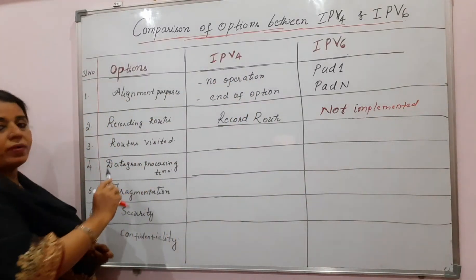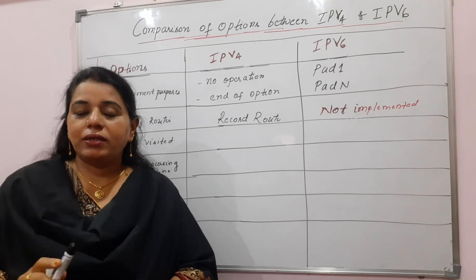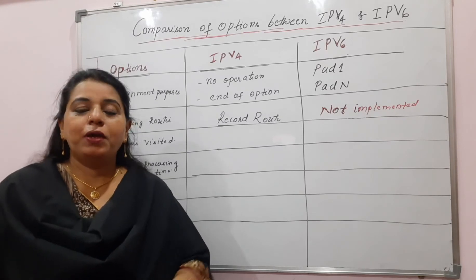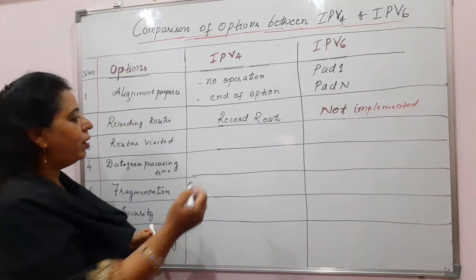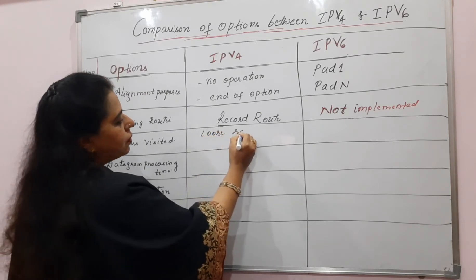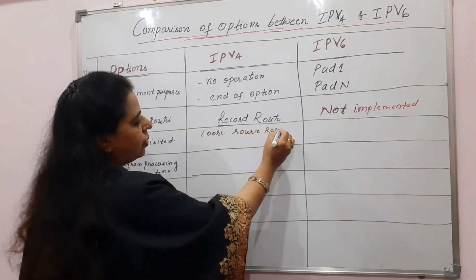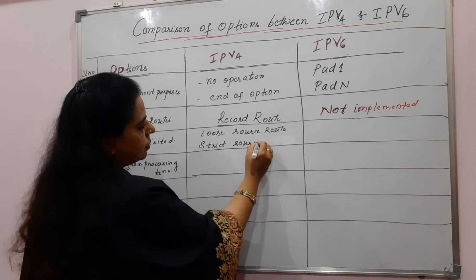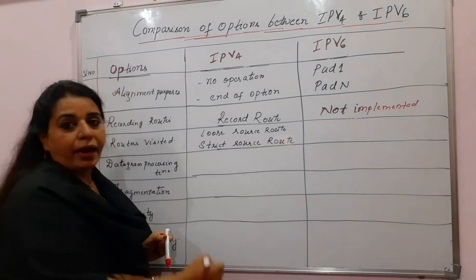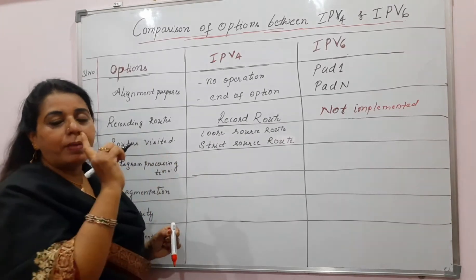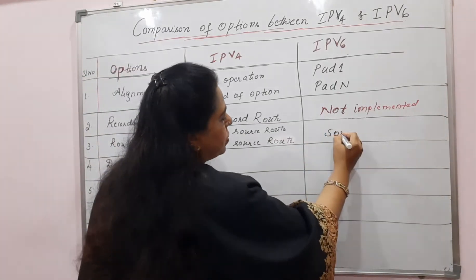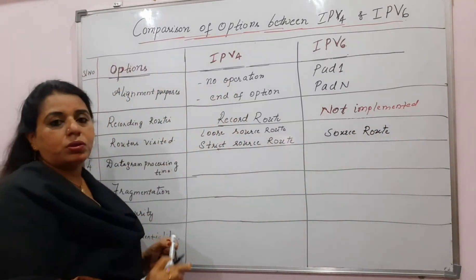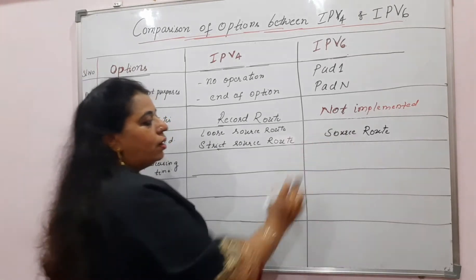The next functionality is routers that have to get visited by the datagram, where the source decides which routers the datagram visits. To carry out this functionality in IPv4, you have Loose Source Route and Strict Source Route. In IPv6, the same functionality is there but under one name: Source Route, which combines the functionality of both Loose Source Route and Strict Source Route.